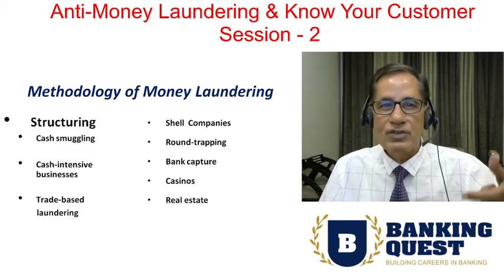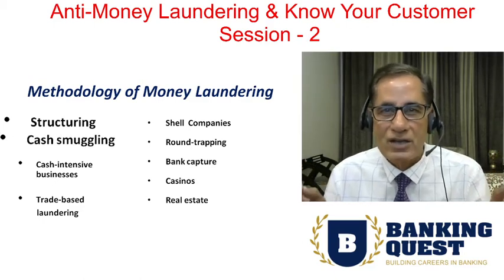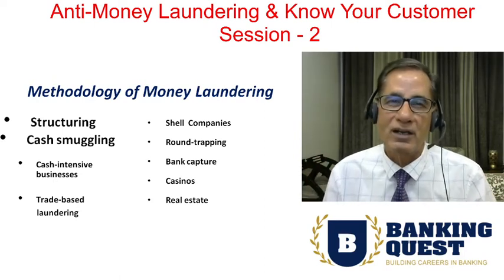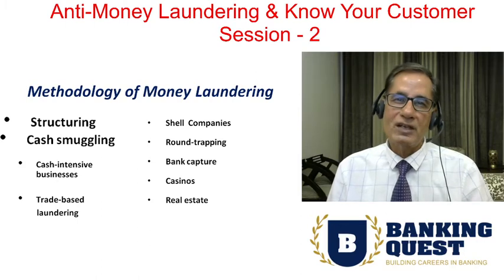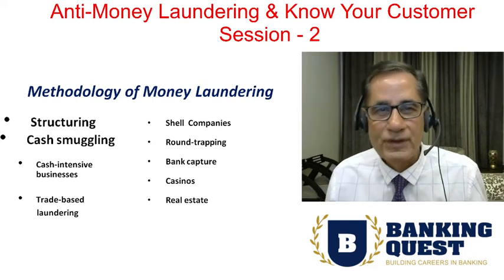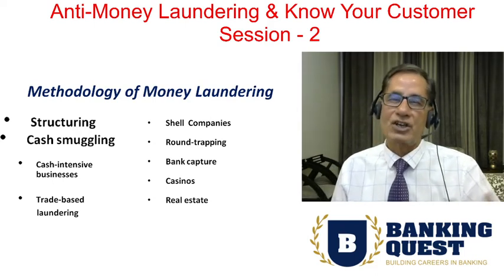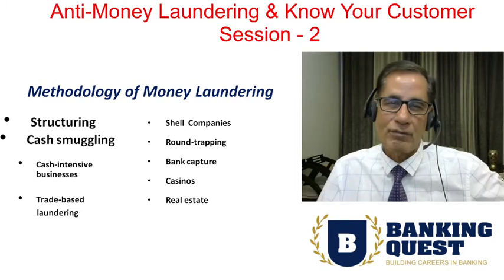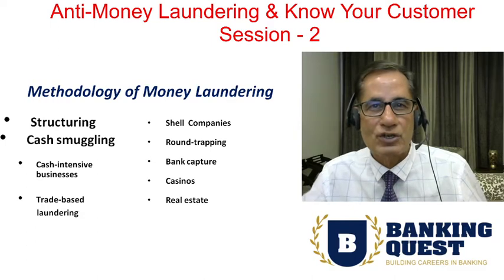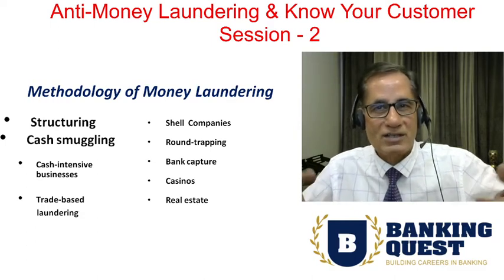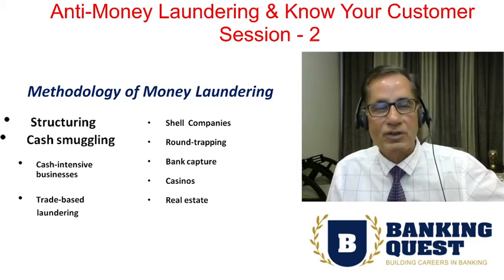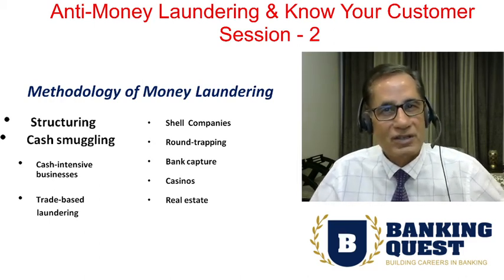The second methodology a money launderer generally adopts is cash smuggling. Suppose a person has earned dirty money out of illegal transactions. He cannot keep this amount at home, nor deposit it in his bank account due to strict laws in India. He will smuggle this cash out of the country and deposit it in a bank in a country where confidentiality laws are very strong but compliance laws are very weak — like a Swiss bank account. Swiss banks do not disclose the identity of their customers, not even to investigating authorities.